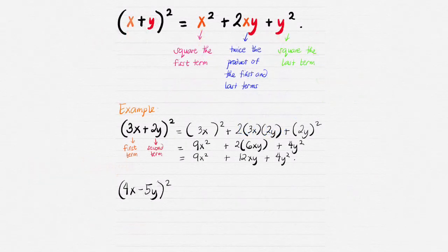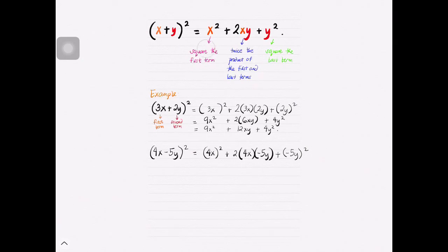Let's have another example. What if we are to square (4x − 5y)? We have to square the first term, so we'll have the square of 4x. Then, plus twice the product of the first and last terms — first term is 4x, second term or the last term is negative 5y — plus we are to square the last term, which is negative 5y.